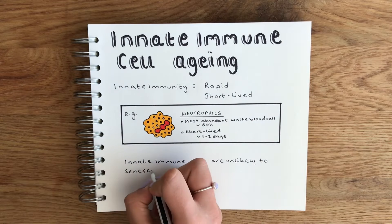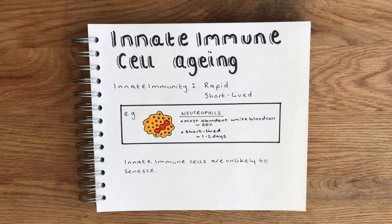The total number of innate immune cells doesn't really decrease with age, because they're short-lived and, unlike the adaptive immune system, they don't develop any memory — once they've done their job they essentially just die. But that doesn't mean that aging doesn't affect the innate immune arm at all.